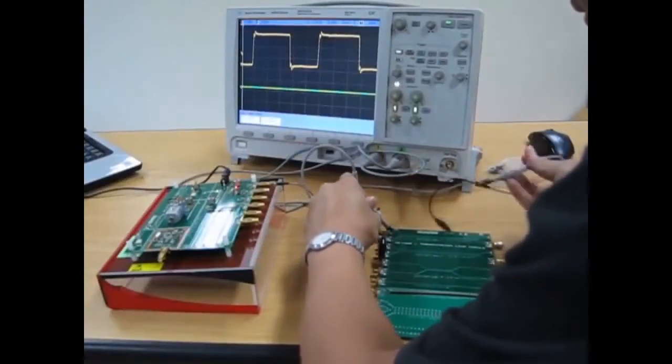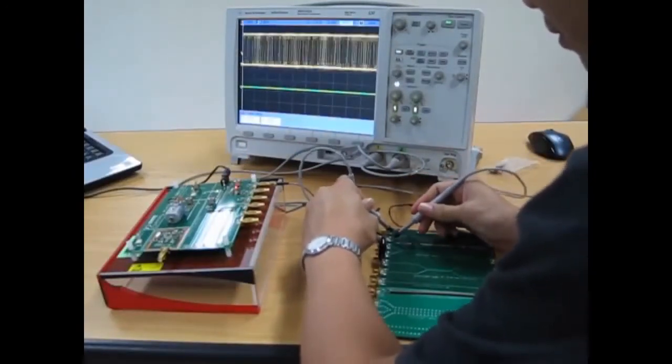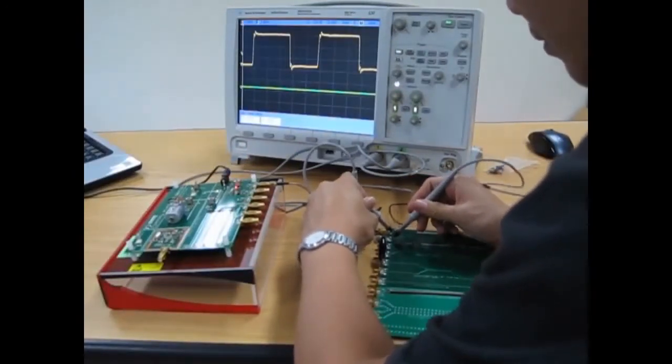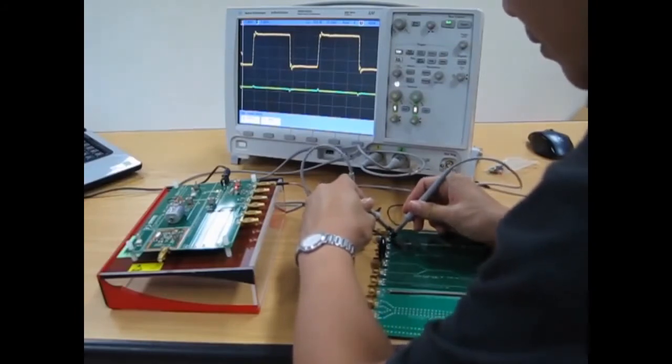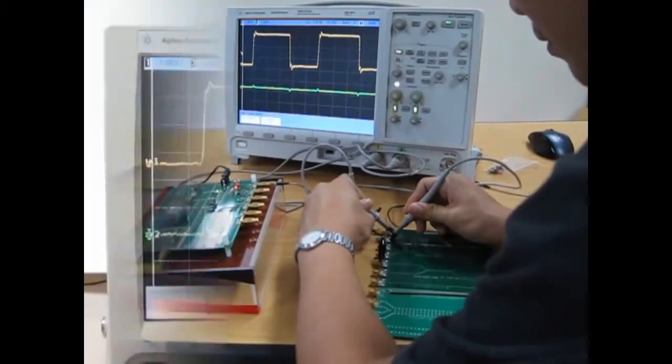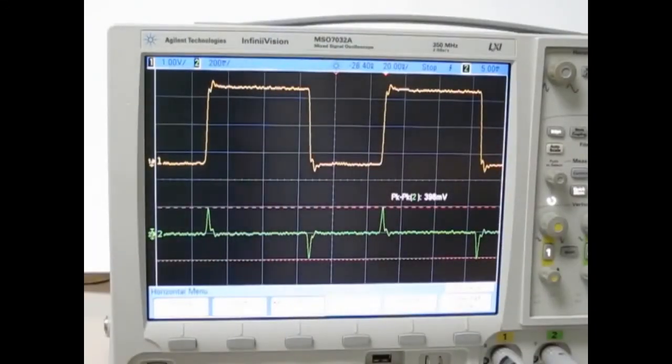We are using two probes at the same time, probe 1 to capture the high-speed pulse which is the EMI signal and probe 2 to capture the induced signals on the adjacent trace. Here you can see that the near end crosstalk spike on the rising edge is a positive spike, whereas on the falling edge, it is a negative spike. You can also see that the peak-to-peak level of the spike is 396 mV. Now give yourself some time to find out the near end crosstalk characteristics.